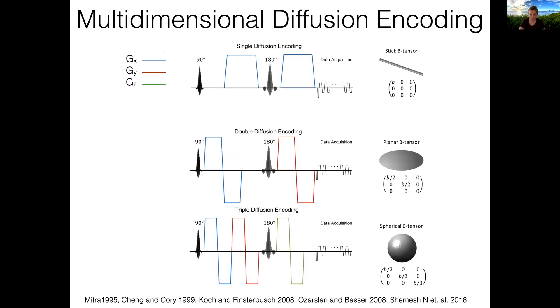Multidimensional diffusion encoding refers to a pulse sequence that encodes more than one diffusion orientation before the readout. In this way, we can encode planar or isotropic diffusion with two or three pairs of orthogonal gradients. Instead of a b-vector, the diffusion sensitivity of these sequences can now be characterized by a b-tensor.